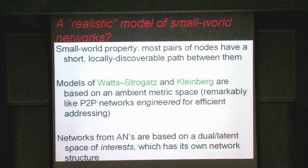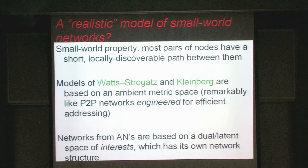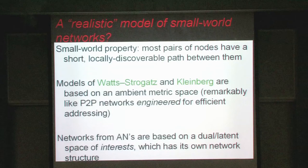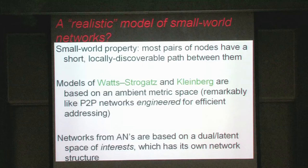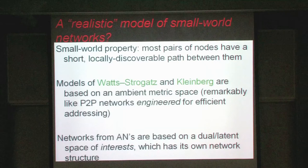Let's revisit the notion of small-world property. Kleinberg and to some extent Watts–Strogatz were the first to pin this down, saying that the small-world property refers to the fact that most pairs of nodes have not just a short path but a short discoverable path between them. In Milgram's experiment, the idea was that you're allowed to forward a message to somebody you knew on a first-name basis. Watts–Strogatz and Kleinberg embed all nodes in some ambient metric space, and there the notion of discoverability is natural: I need to go from coordinate x, y to x', y', always forwarding to the neighbor closer to the target.